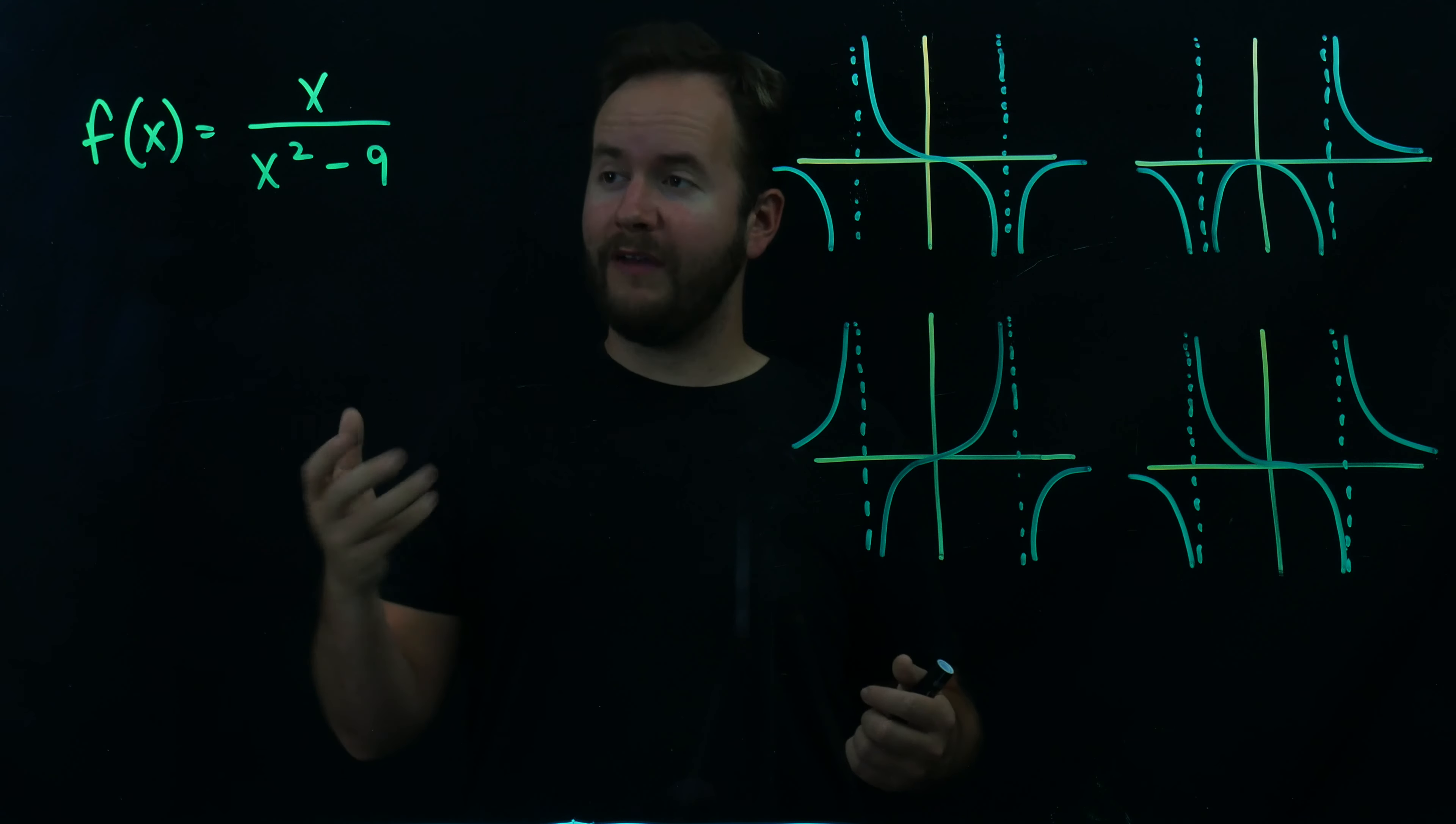So let's take something like x equals 4 and plug it in here. We'll get 4 over 4 squared, which is 16, minus 9 is 7. I don't really care about the number. I just care that it's positive. So I get a positive result by plugging in a number larger than 3.